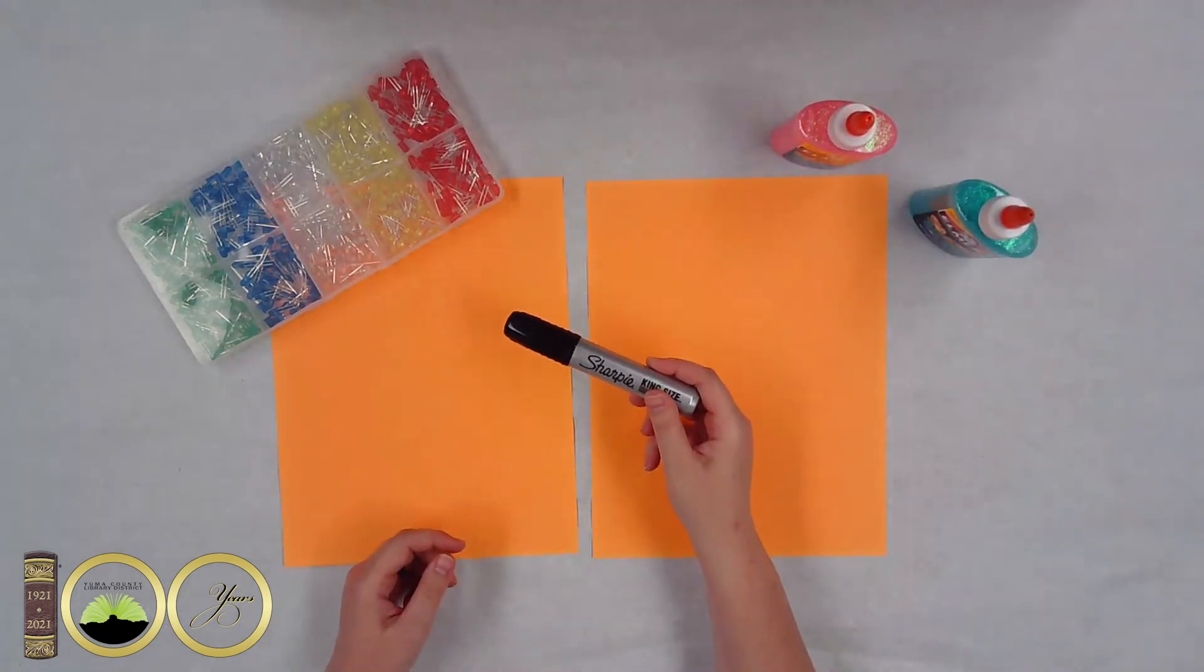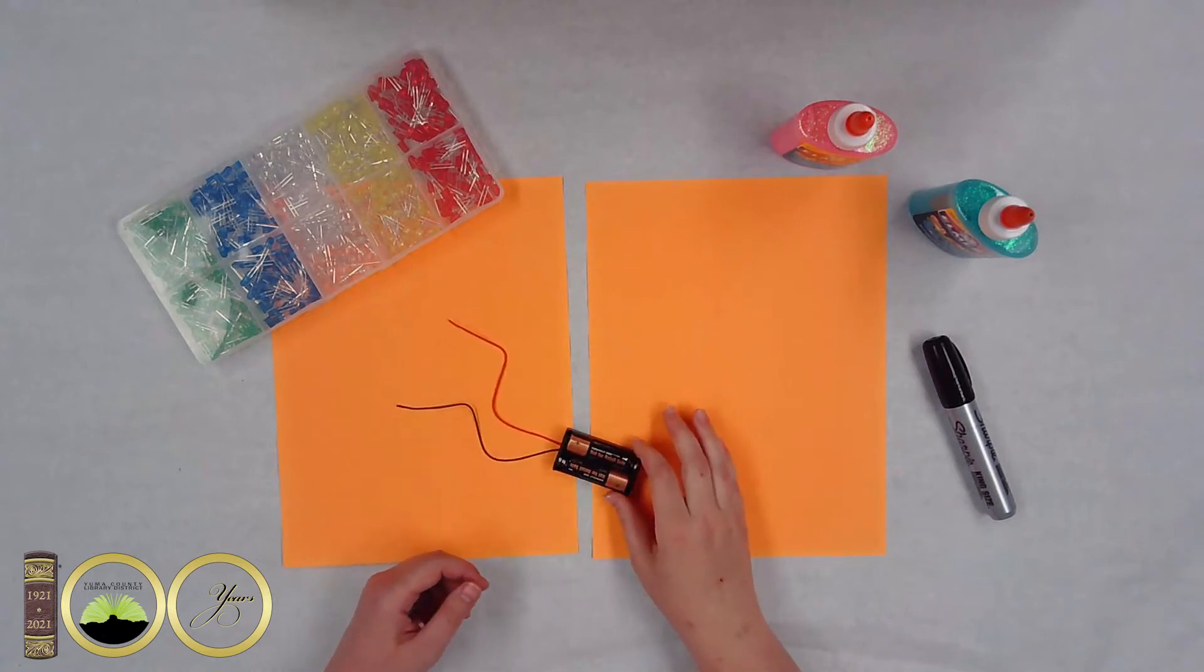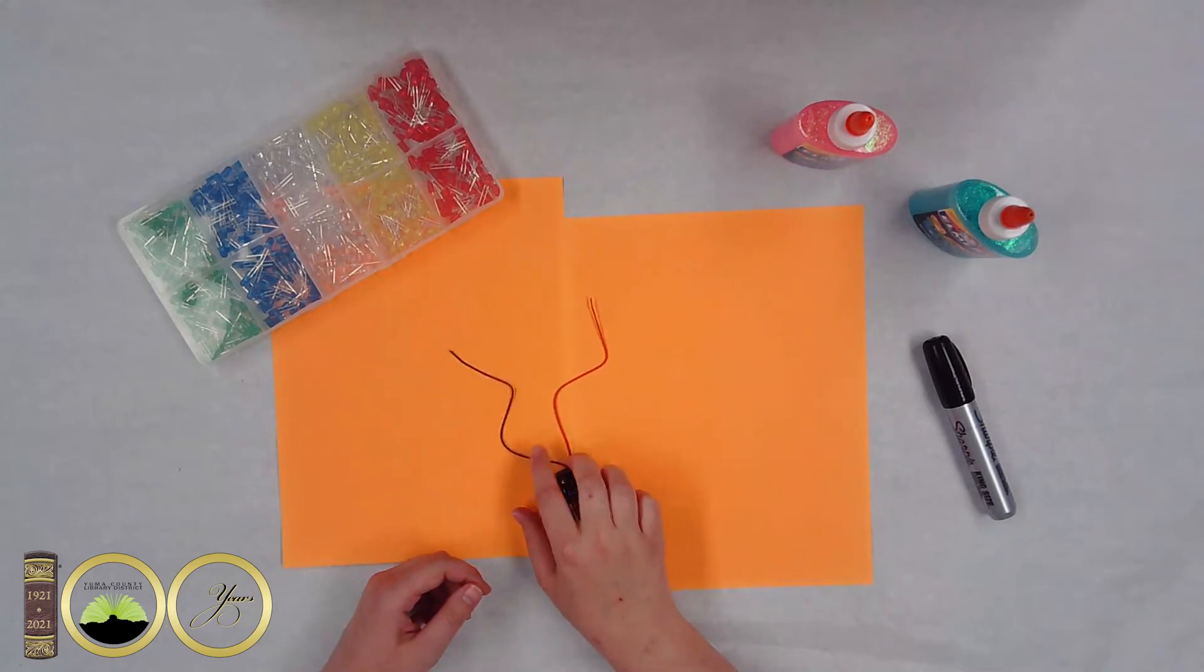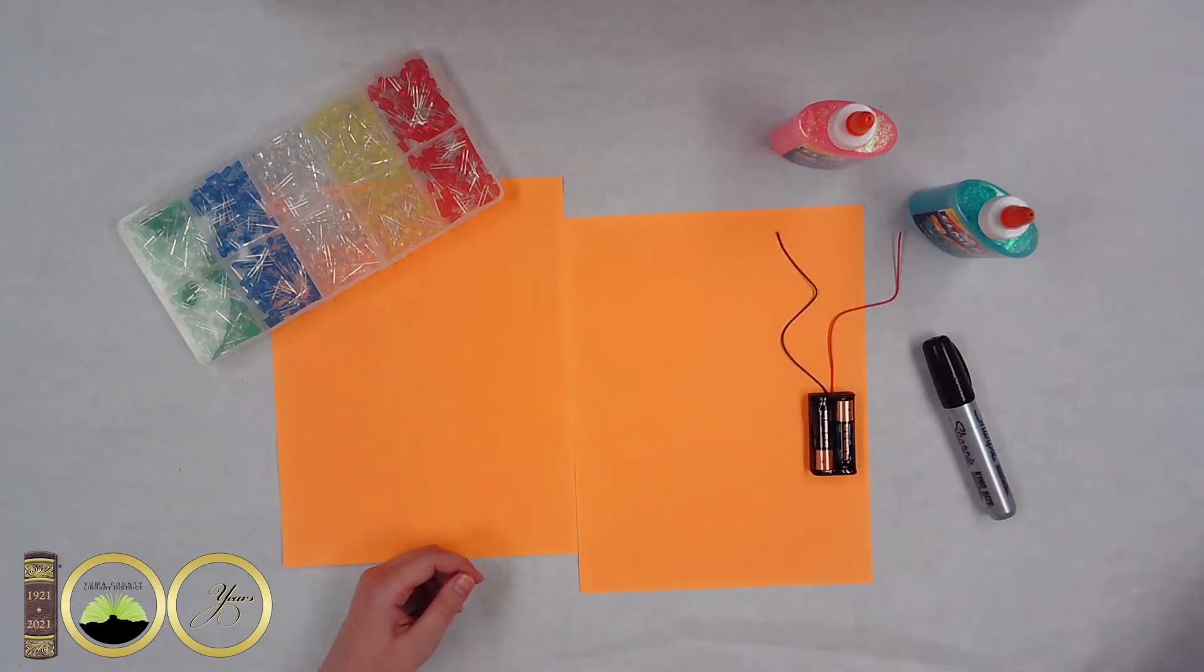A marker. A AA battery pack. You'll notice there's two wires. The red one is the positive. The black one is the negative. You'll also need two AA batteries as well to power that.